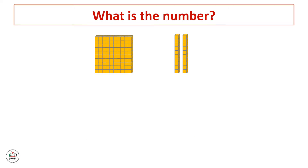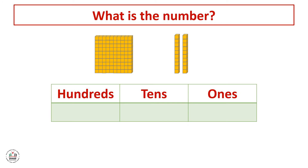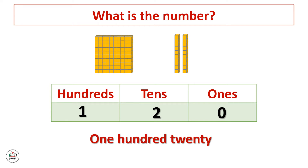Now let's remember the place value chart. In the place value chart, we have hundreds, tens, and ones. Here we don't have ones, so the number of ones is 0. And the number of tens here is 2, so we have 2 tens or 20. And the number of hundreds here is only 1. We read the number from left to the right, so here we have 120.